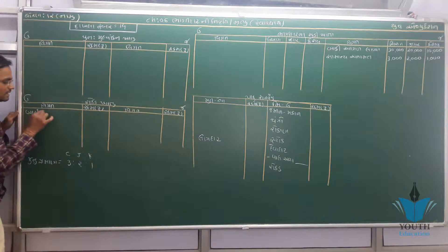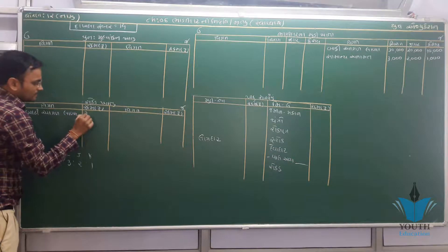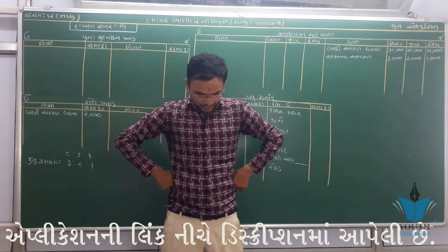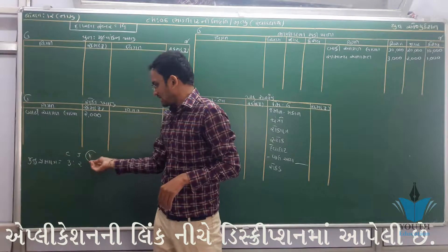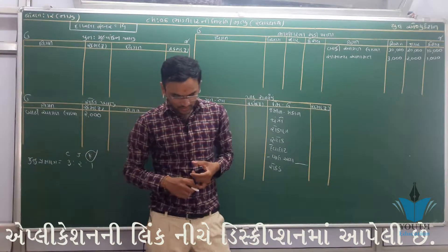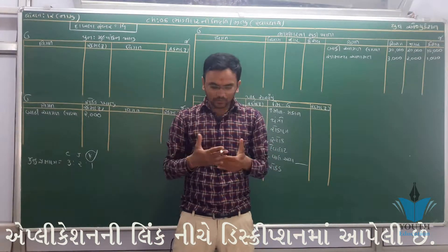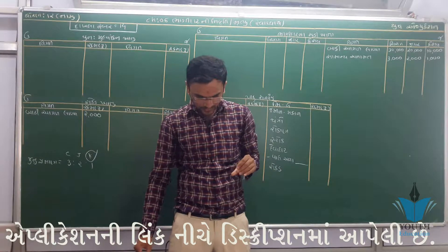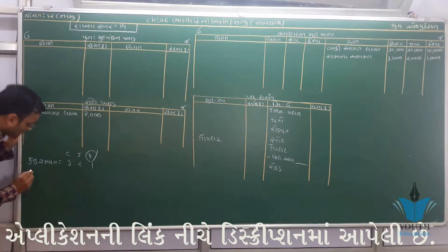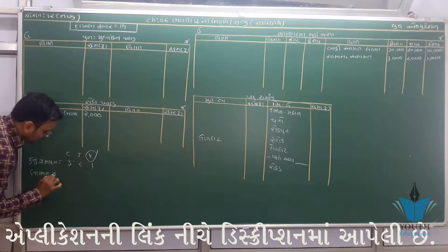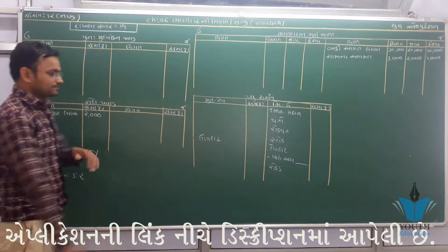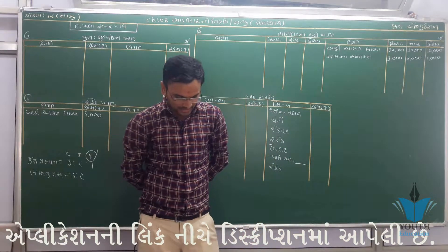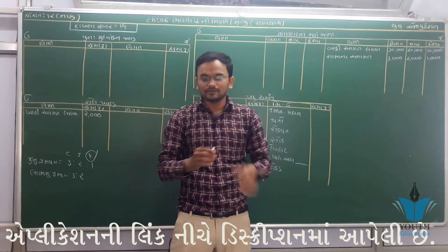તારીખ 31 બીજા સોળ (2016) ના રોજ કેશવ નિવૃત્ત થાય છે. નિવૃત્તિ વખતે નક્કી કરેલ શરતો નીચે પ્રમાણે છે. સૌ પ્રથમ જૂના પ્રમાણ 3:2:1 ગણ્યા. નવા પ્રમાણ 3:2 ગણ્યા. શરૂ કરીશું: જૂની જમીન-મકાન કિંમત 20 ટકા વધારવી.